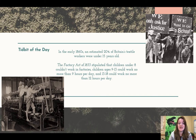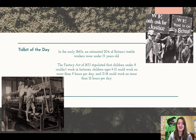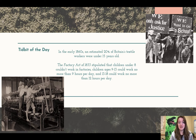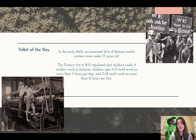Our tidbit of the day: in the early 1860s, an estimated 20% of Britain's textile workers were under 15 years old — one in five people working in the textile industry was probably your age or younger. The Factory Act of 1833 stipulated that children under age eight couldn't work in factories at all, children ages nine to 13 could work no more than nine hours per day, and 13 to 18 could work no more than 12 hours per day.